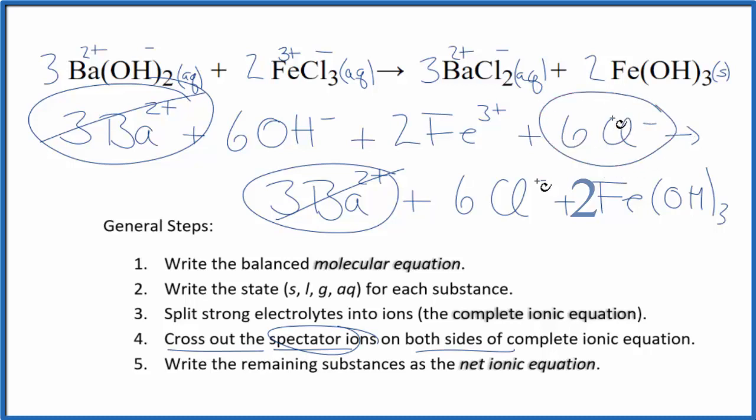I see I have six chloride ions, products, six chloride ions, cross them out. But everything else, that's unique. That gives us our net ionic equation for barium hydroxide plus iron three chloride.